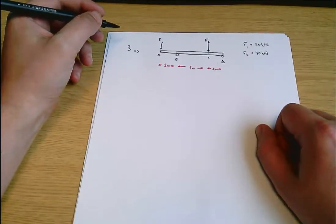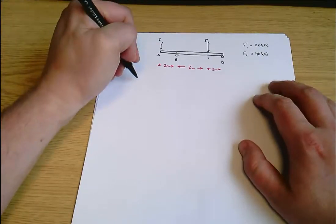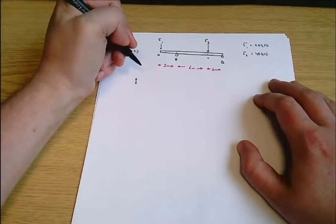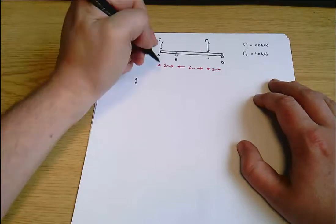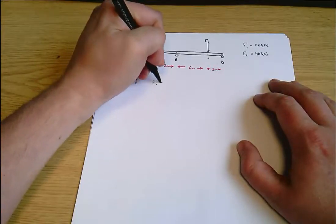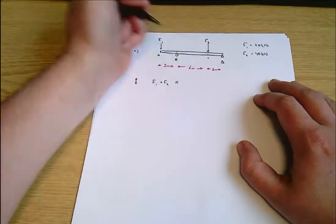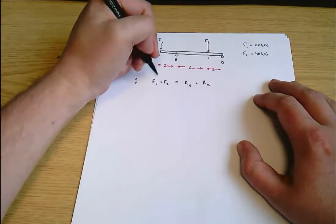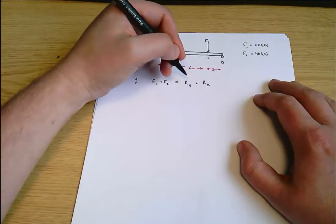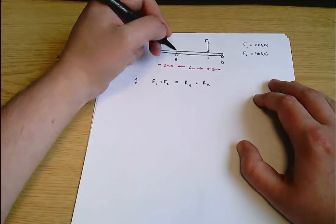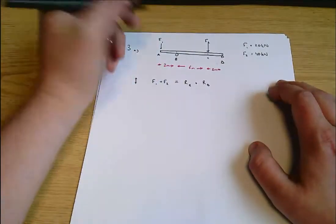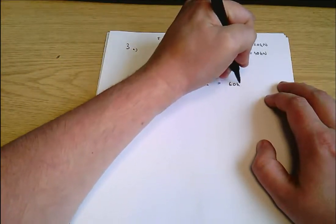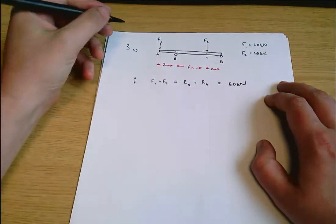What we want to find are the reaction forces at B and D. Looking at this in the simplest way to start with, we can look at vertical equilibrium. The beam isn't moving so it must be in equilibrium, which means forces acting downwards, that's F1 plus F2, equals forces acting upwards, that's the reaction force at B plus the reaction force at D. F1 plus F2 equals 60 kilonewtons.